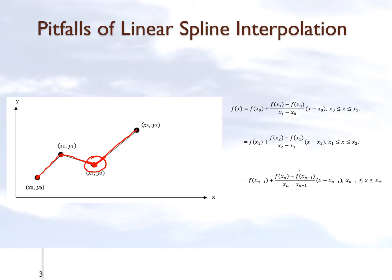So how do we go about avoiding that? The other issue is that if you look at this particular straight line approximation from one point to the next, it only depends on the values of x₀, y₀, x₁, and y₁ — it does not depend on any of the other values. That is also a pitfall of linear spline interpolation. We can overcome that by using quadratic spline interpolation or cubic spline interpolation.